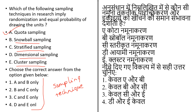Cluster sampling is a probability sampling technique where the researcher divides the population into multiple groups and then randomly selects from those groups using simple random and systematic random techniques for data collection and analysis. Stratified sampling is a type of sampling method in which the total population is divided into small groups based on some common characteristic, after which the researcher randomly selects the sample proportionally.